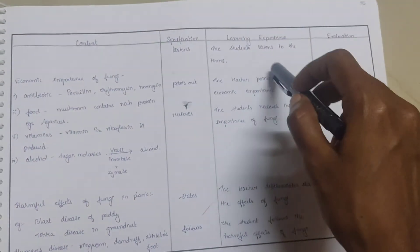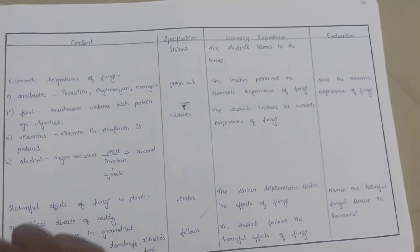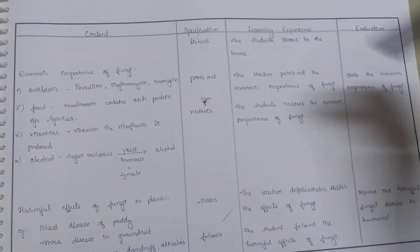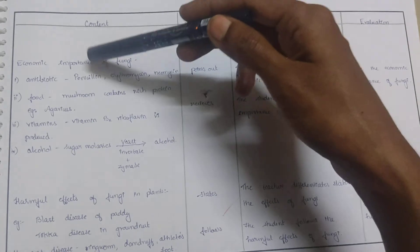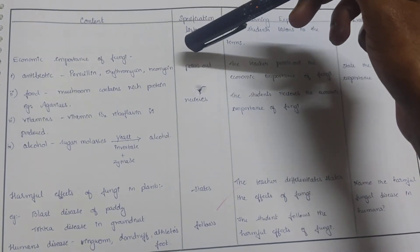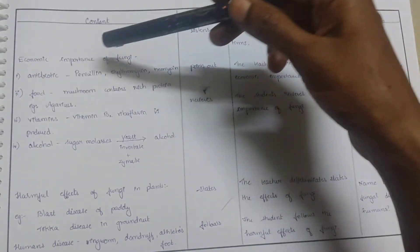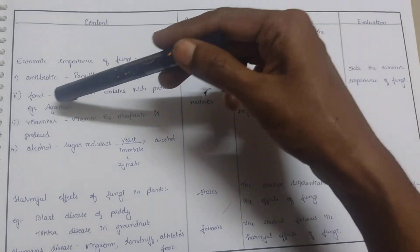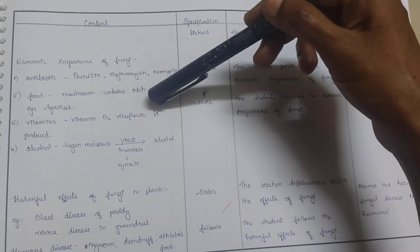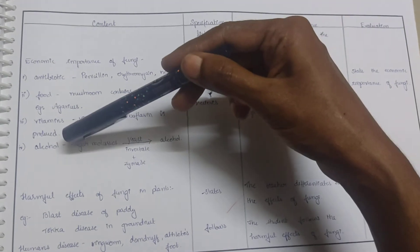The student listens to the terms. Next, economic importance of fungi: it is used as an antibiotic like penicillin, erythromycin, and neomycin. In foods, mushroom contains rich protein, for example Agaricus.